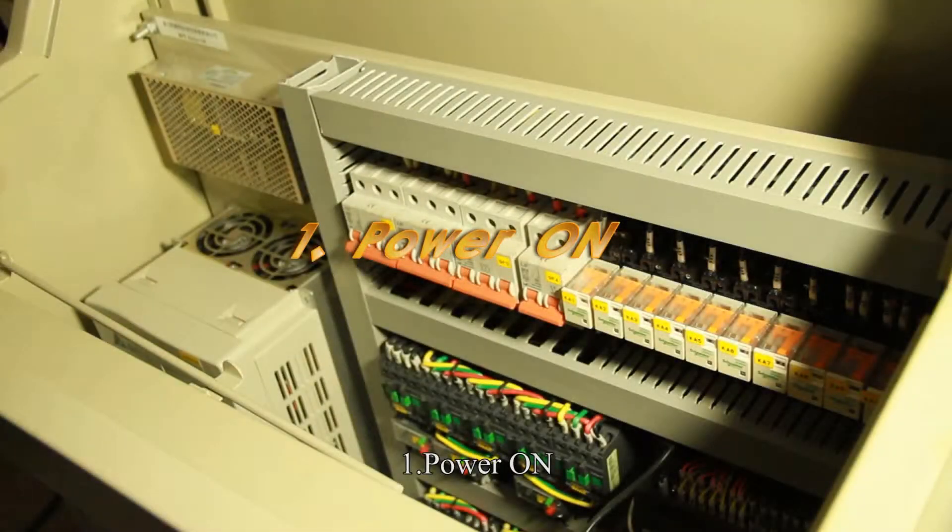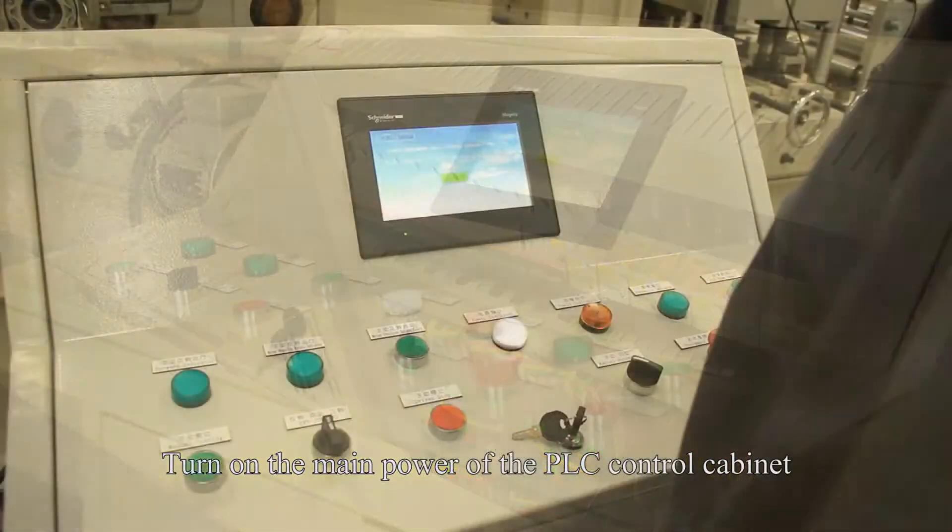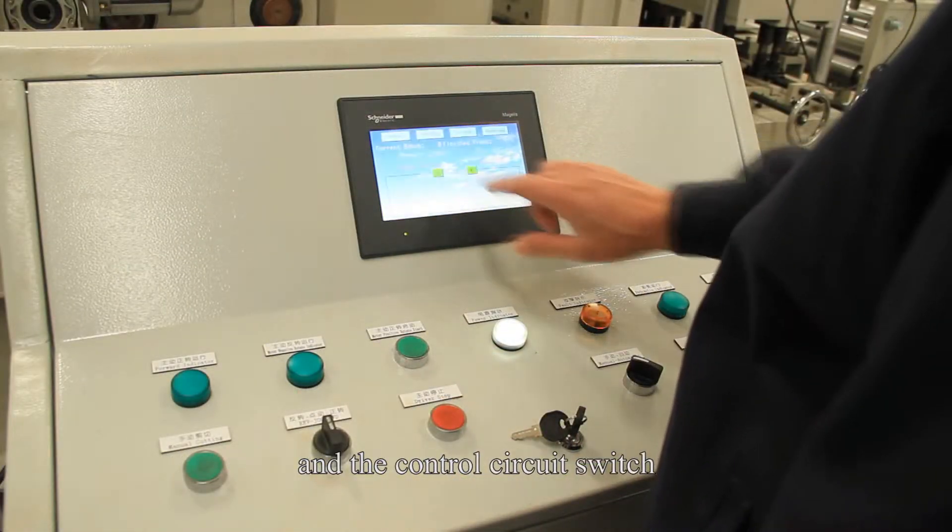Number 1: Power on. Turn on the main power of the PLC control cabinet and the control circuit switch.